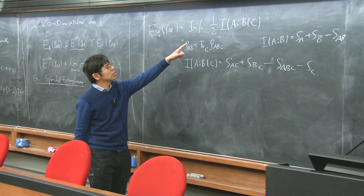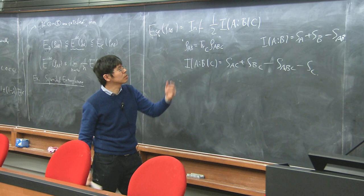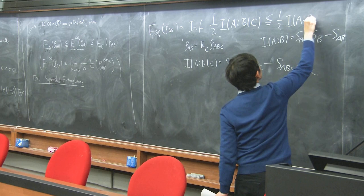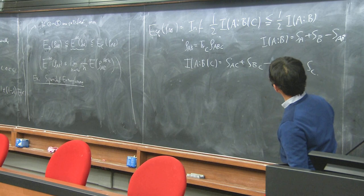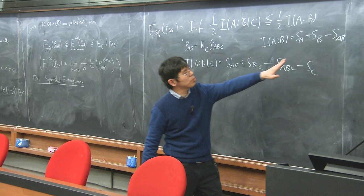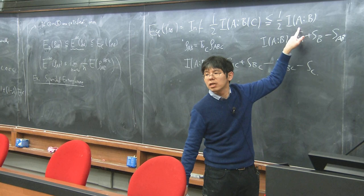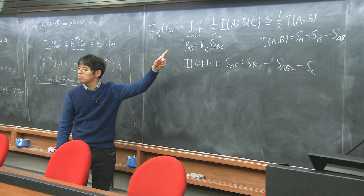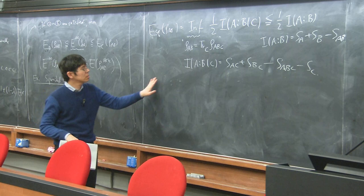Obviously, squashed entanglement is very difficult to compute. We take an arbitrary state and have to take a minimization, which is a real serious problem. But this kind of definition is quite good because we can prove many inequalities. If the auxiliary system C is trivial, this becomes just mutual information, bounded by half the mutual information. And half the mutual information, if the total system is pure, equals S(A) = S(B), so it reduces to the standard entropy. For pure states, this reduces to the standard measure.